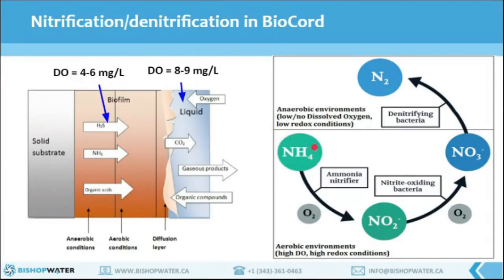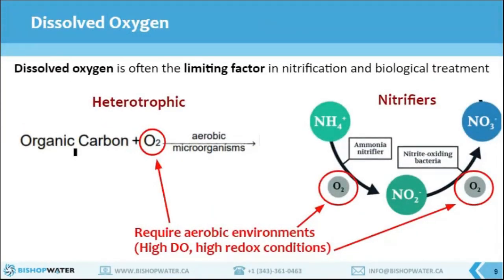Inside the BioCore biofilm both aerobic and anaerobic conditions co-exist. Dissolved oxygen present in the bulk liquid should be at an adequate concentration so that it can diffuse inside the biofilm and be available to heterotrophic or nitrifying bacteria. As shown in the picture on the left, the nitrifying bacteria developed inside the biofilm will activate when dissolved oxygen is present at lower levels in the bulk liquid. Therefore, if we can control the level of oxygen in the bulk liquid, we can achieve both nitrification and denitrification. In nitrification, organic carbon removal, and denitrification processes, dissolved oxygen in the bulk liquid represents the limiting factor — both heterotrophic bacteria and nitrifiers require dissolved oxygen, especially in cold weather conditions.